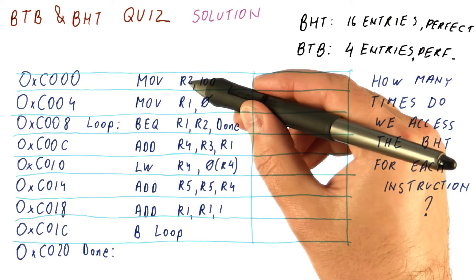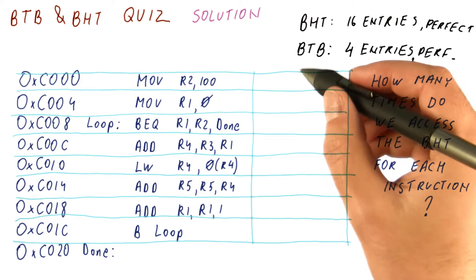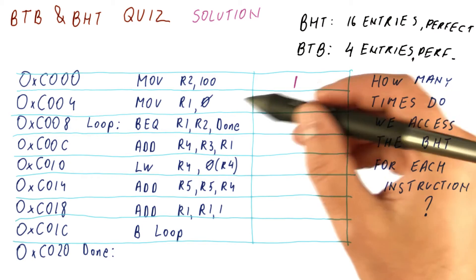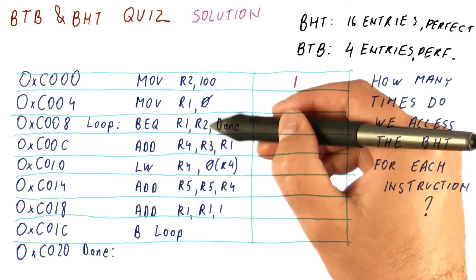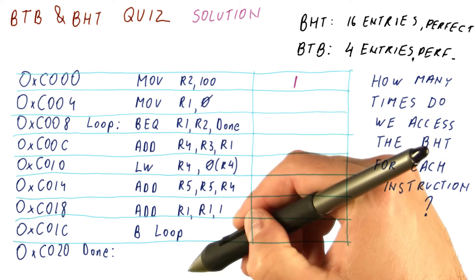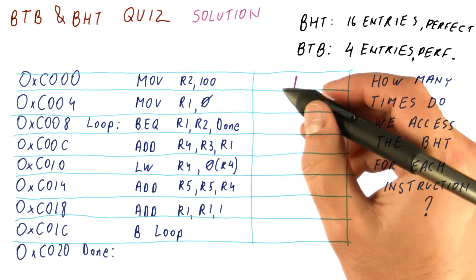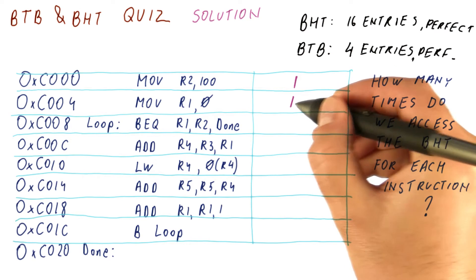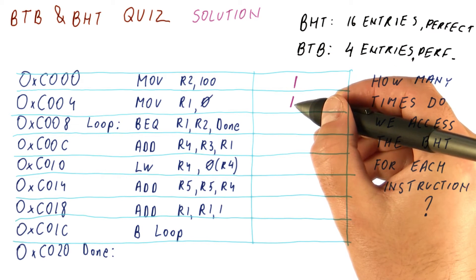This instruction here initializes R2 to 100, and that instruction executes only one time. Once we are done executing it, we will go into the loop here and then exit, never coming back here. Same here, this puts 0 in R1, that executes only once.